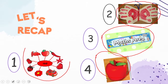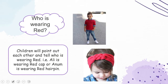Now let's take a look at the board. In the previous lesson, I asked you to read on this screen: who is wearing red? Children will point out each other and tell who is wearing red — for example, Ali is wearing a red cap or Annam is wearing a red hairpin.